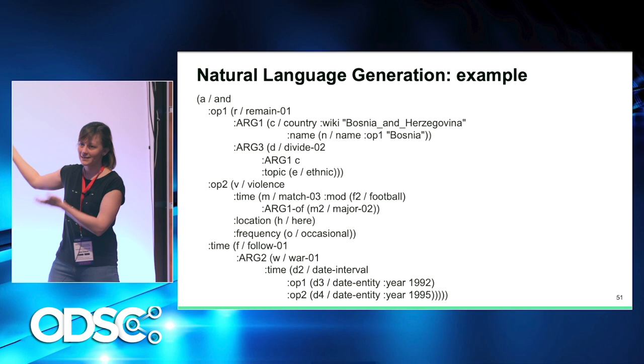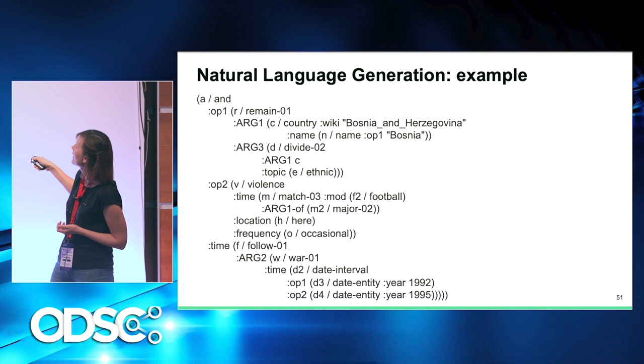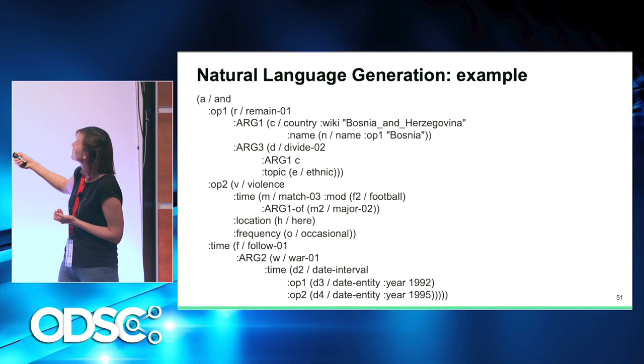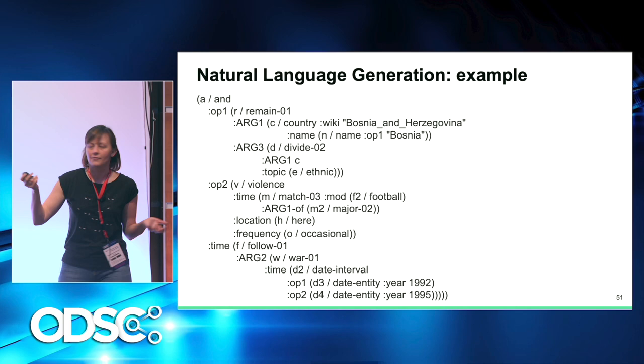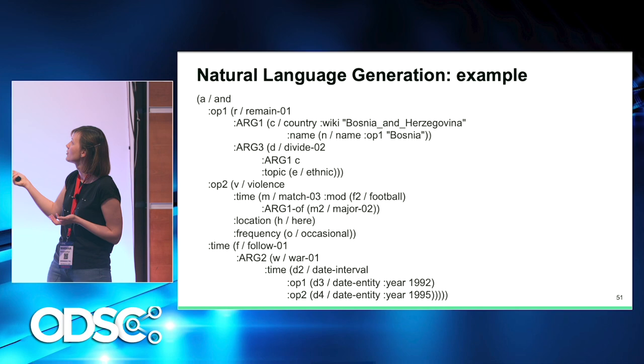If we look at this AMR and try to interpret it, the main concept is 'and,' meaning there will be two events. The first is a country named Bosnia — here you can see wikification with a partial wiki URL. Country Bosnia remains probably ethnically divided. The second event is violence — we don't know who is committing it or who it's targeted at, but we have information about frequency, location, and time: it happens occasionally, presumably in Bosnia, during major football matches.